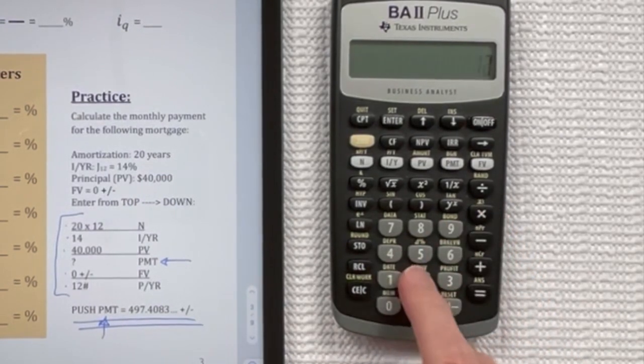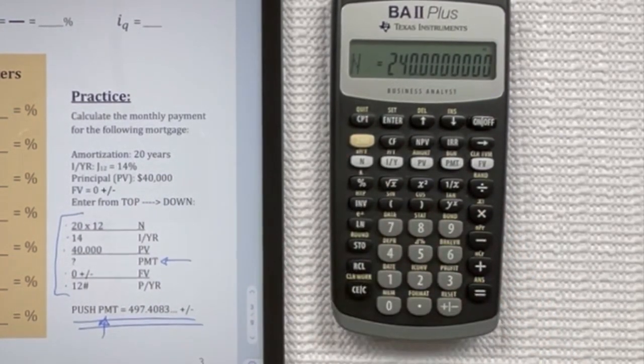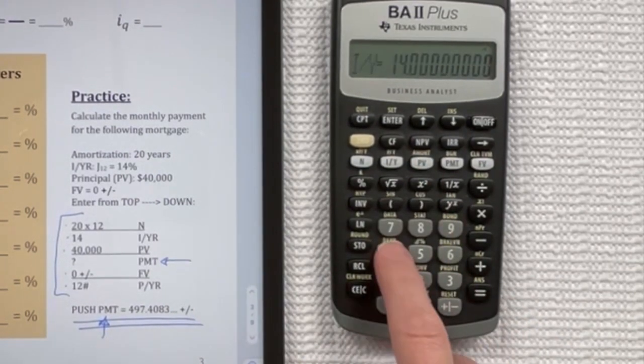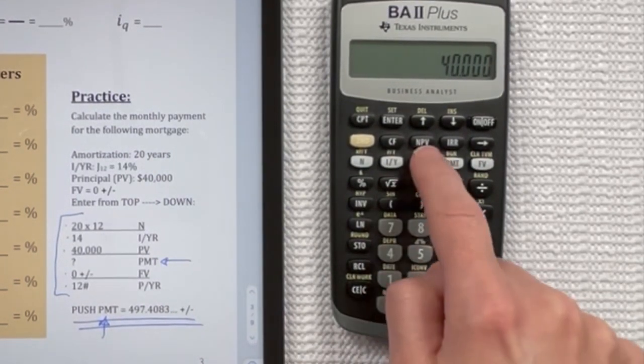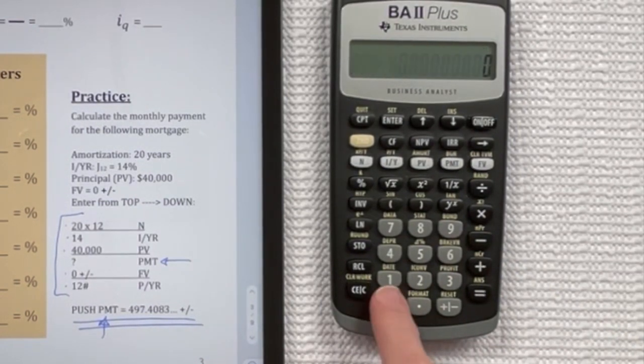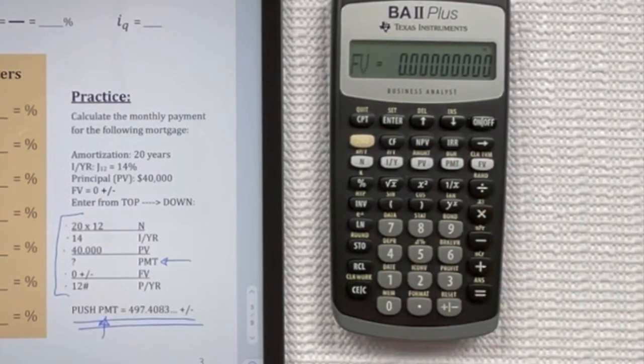I'm going to multiply 20 times 12 equals and push N. 14 IYR, 40,000 PV. Skip the payment. That's what you're trying to find. Zero plus minus future value.